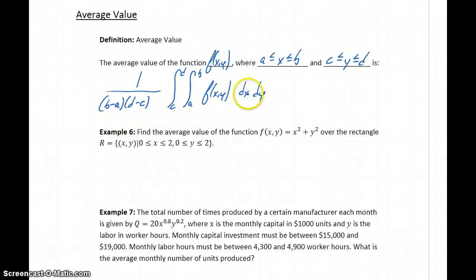Or we could reverse that order and write it as 1 over (b-a)(d-c) times the integral from a to b of the integral from c to d of f(x,y) dy dx. The order of integration isn't important, whether we integrate with respect to x or y first, as long as we keep the right upper and lower bounds paired with the right variable.